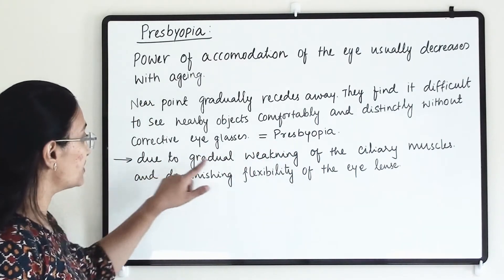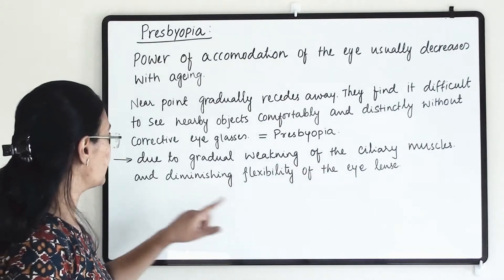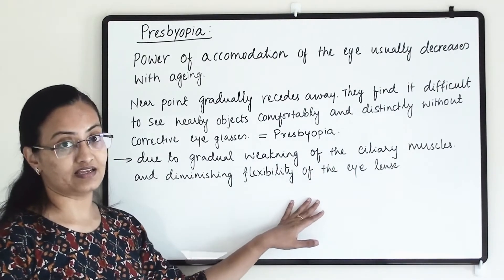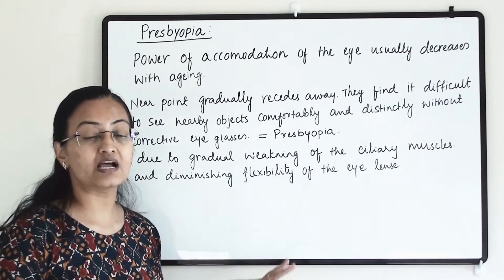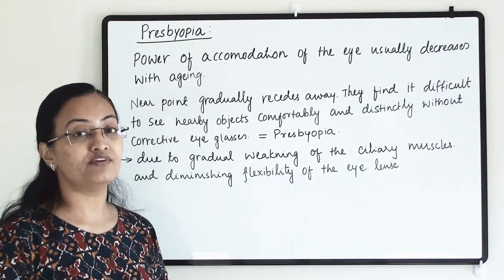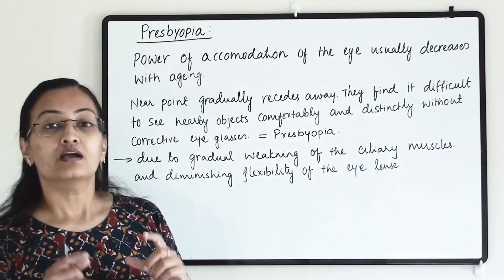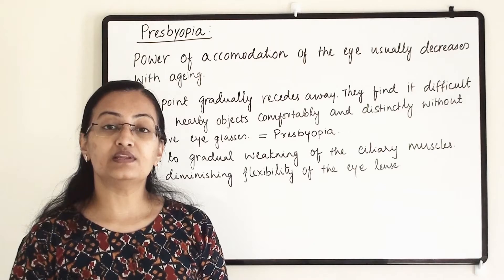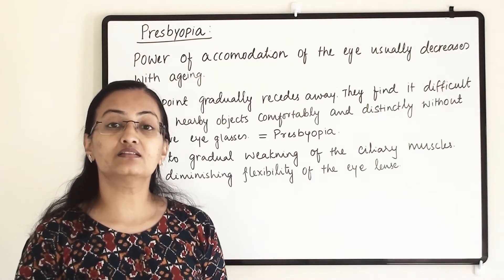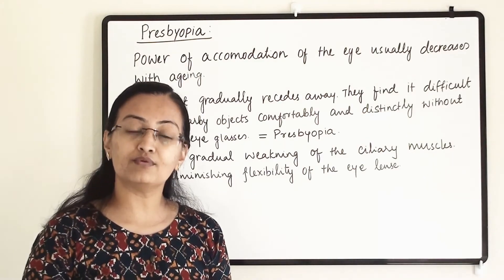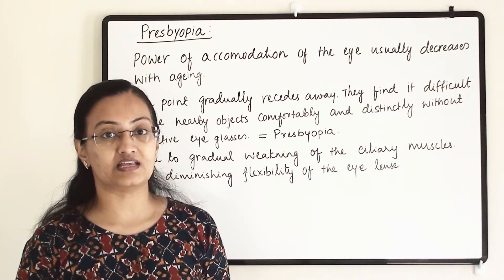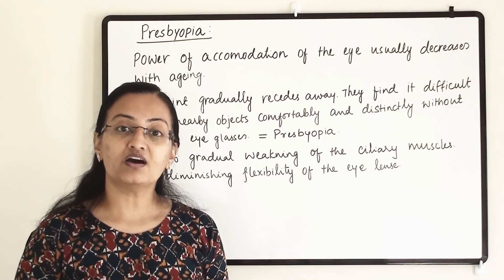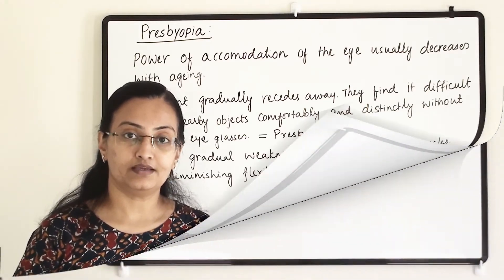This defect is corrected by combining both lenses. Progressive lenses are a combination of concave and convex lenses, so a person will be able to see both far and near objects clearly.